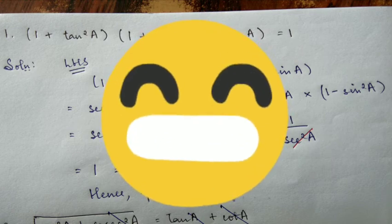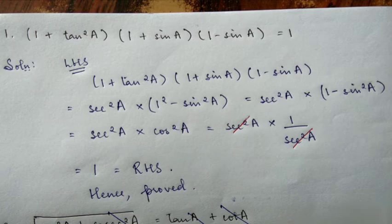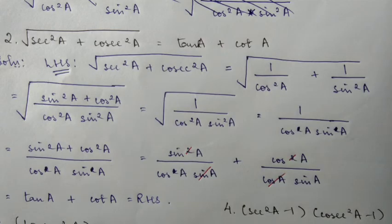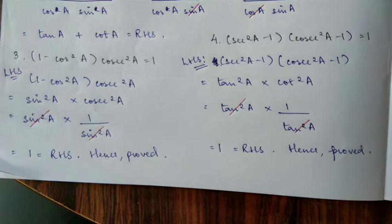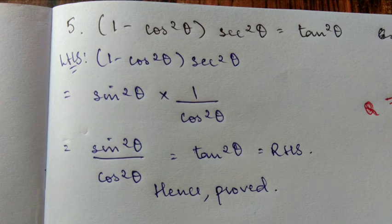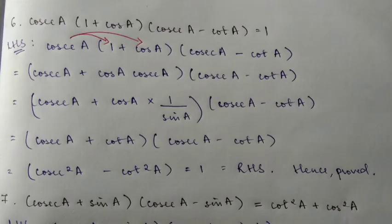Alright, now question number one through six — the answers involve direct substitution. You just substitute using the formula directly. For question number two, there's a square root involved, but you still substitute. For questions three and four as well, it's direct substitution. Question five also uses direct substitution with the formula. Question six similarly — substitute and simplify.